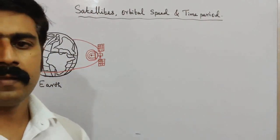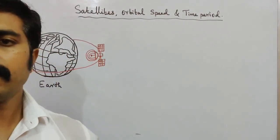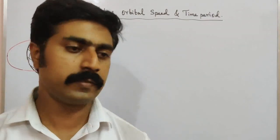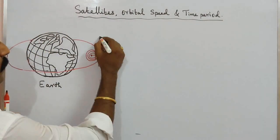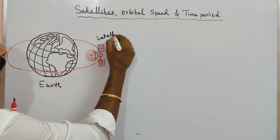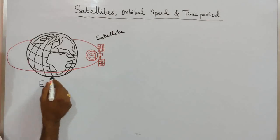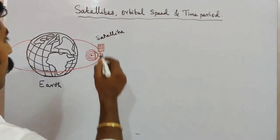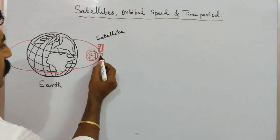First, satellites — natural satellites, then artificial satellites, also called man-made satellites. So here is one satellite. This is the man-made satellite. This is the Earth. A natural satellite is a planet, while an artificial satellite revolves around the Earth in a circular orbit. This is the artificial satellite.